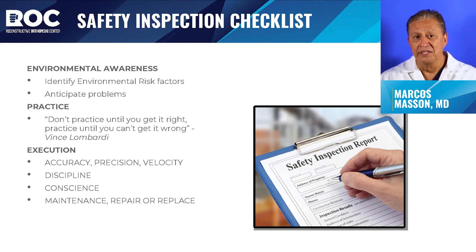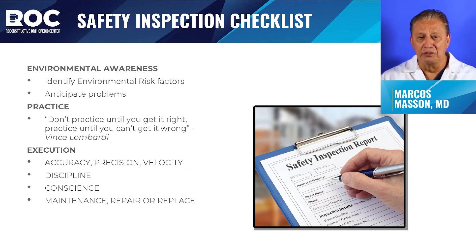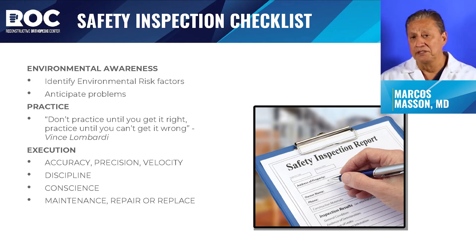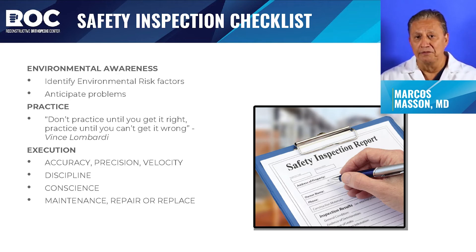Execution is what you do — not only conceptually what you think you will do. What you do must be accurate; you must demonstrate discipline, following the rules and steps you've been trained on, and being conscious of the environment. If something is functional, don't take a risk. Maintenance, repairs, and replacements are required, and the awareness of each individual using the equipment, supplies, and instruments must be communicated to the supervisors.